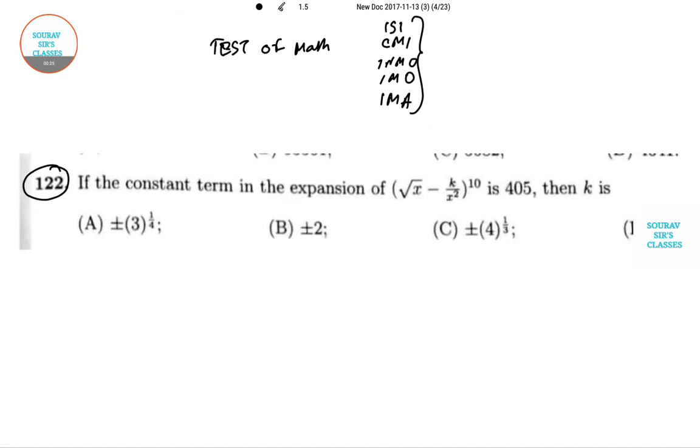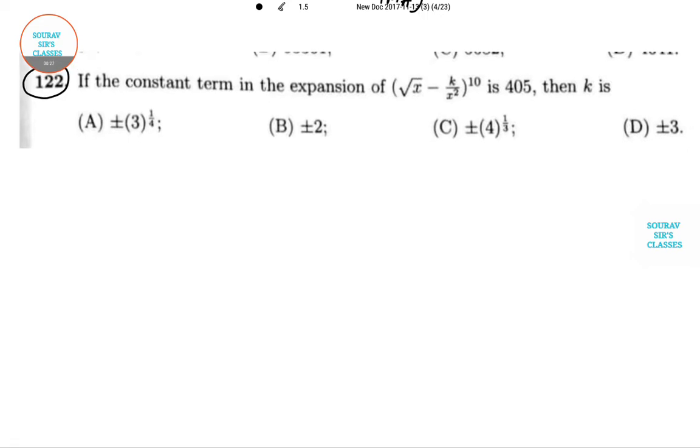Question number 122: If the constant term in the expansion is 405, then what is the value of K? It's not that difficult; it's actually associated with your class 11 syllabus as well.